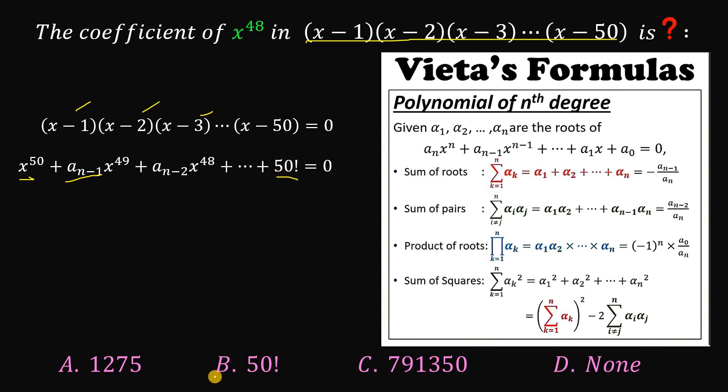So 50 factorial is the product. So letter B is not the answer. So the only choice is letter A or letter C, maybe letter D or none of the above.